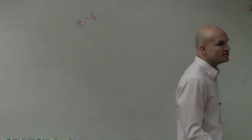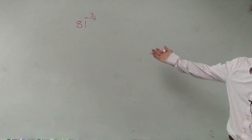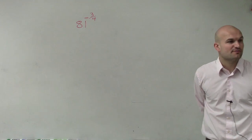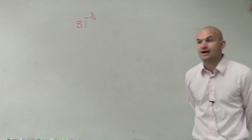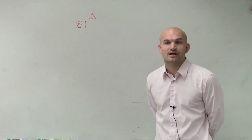Holy moly. So when doing a problem like this, what we can simply look at is 81 to the negative 3 fourths. So now we have a number, and now we have two different integers in our numerator and denominator.